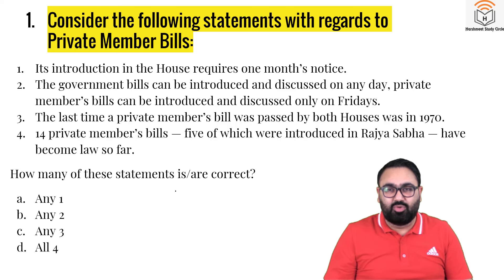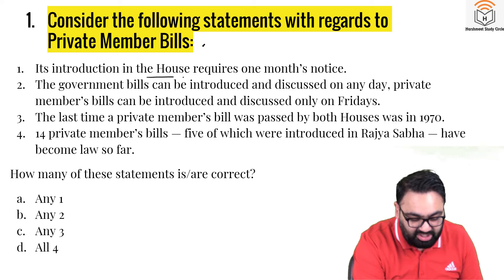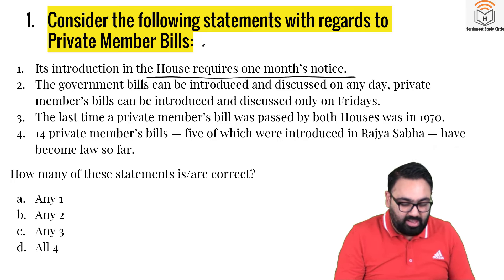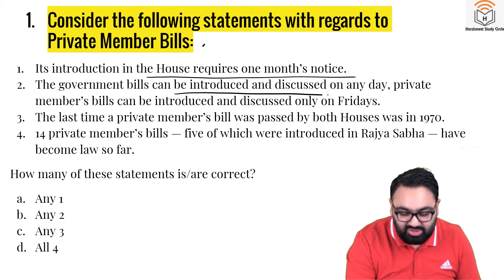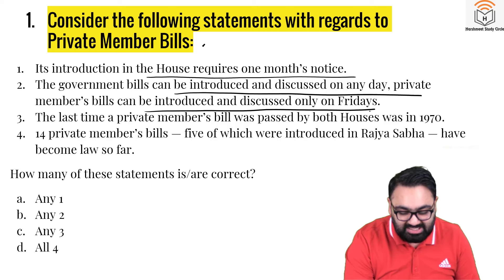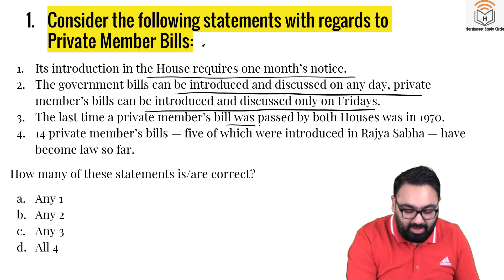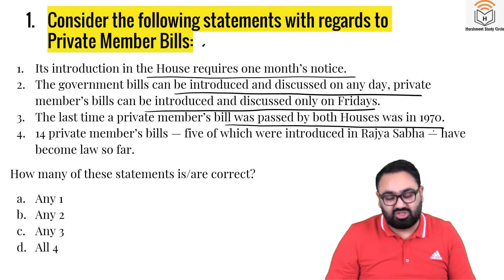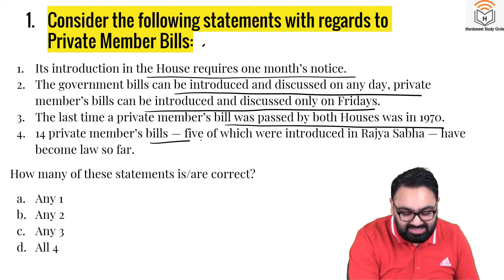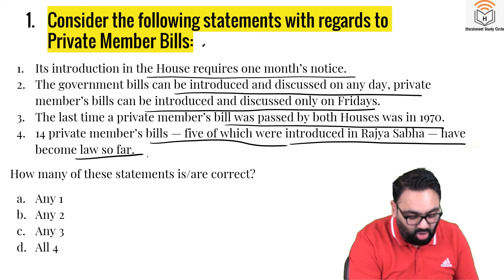Consider the following statements with regard to private member bills. One: its introduction in the house requires one month's notice. Two: government bills can be introduced and discussed on any day, while private member bills can be introduced and discussed only on Fridays. Three: the last time a private member's bill was passed by both houses was in 1970. Four: 14 private member bills, five of which were introduced in Rajya Sabha, have become law so far.